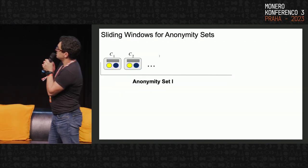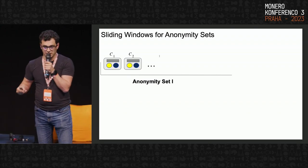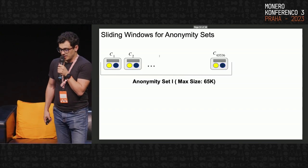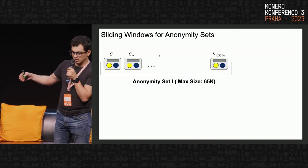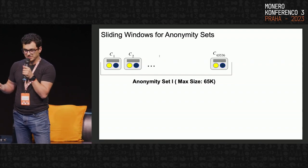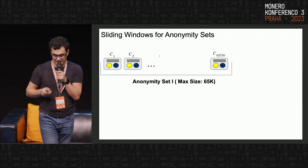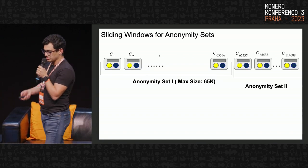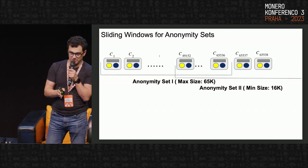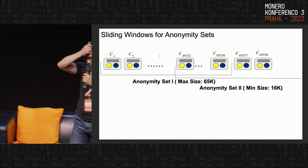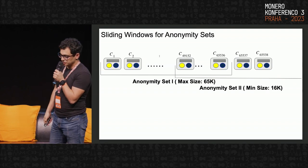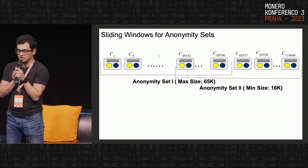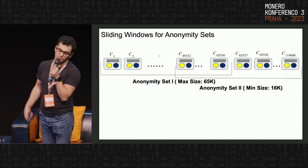Regarding how we maintain the anonymity sets: coins are added incrementally to a global pool of coins. We logically divide the global pool into anonymity sets of fixed size — potentially growing up to 65,000 coins. Instead of starting the second set immediately, we shift the starting point left by approximately 16,000 coins to ensure that no newly started anonymity set will be empty, guaranteeing it has enough coins to provide sufficiently high anonymity.